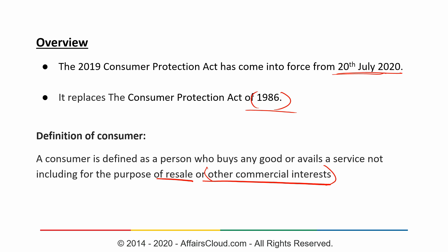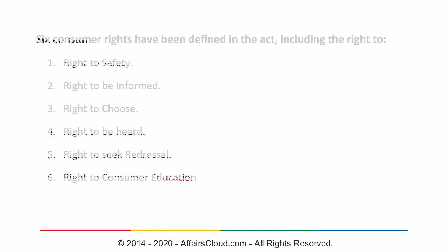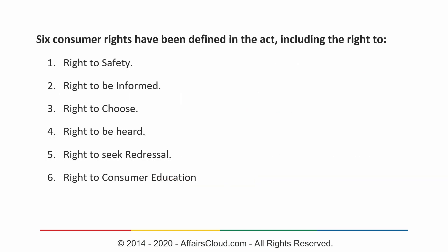Six consumer rights have been defined according to this new act, including: the right to safety, the right to be informed, the right to choose, the right to be heard (which in this context means legal hearing), the right to seek redressal, and the right to consumer education. These are the six consumer rights defined in this new act.